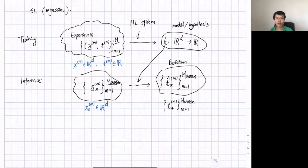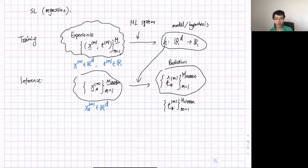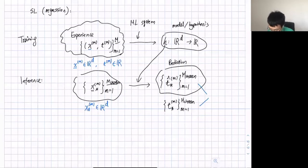True labels can be collected retrospectively. For example, in the stock market you don't know tomorrow's price, but after tomorrow you know it. Or you already know it but pretend you don't, and ask the model to predict. Then you compare your prediction with the known label, and that gives you some error — the measure of success of your model.